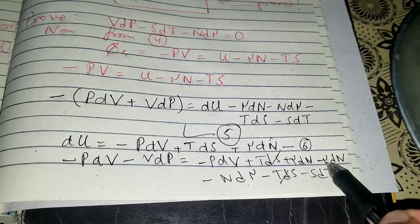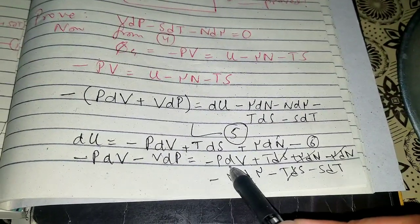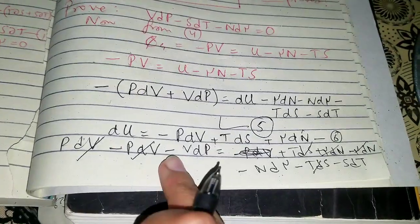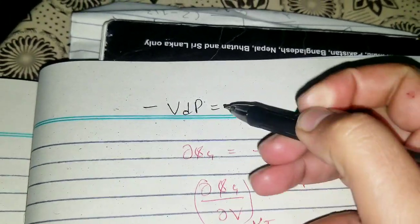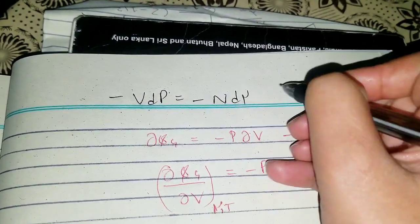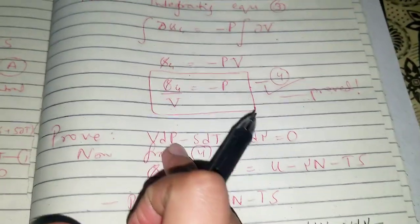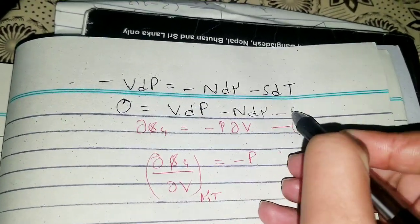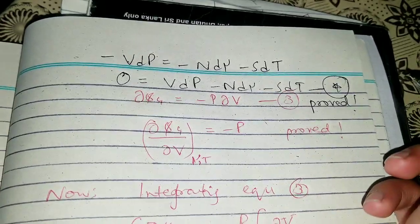After substitution, the μdN terms cancel and the -pdV and +pdV terms cancel, leaving: 0 = -V dp - N dμ - S dT, or equivalently: V dp - N dμ - S dT = 0. This is the Gibbs-Duhem-like relation that was to be proved.